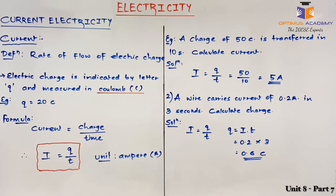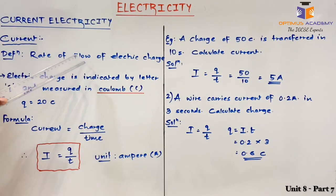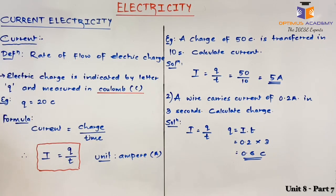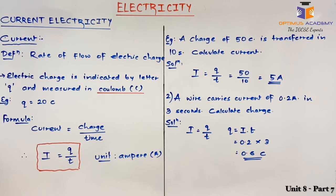First we shall discuss about current. Current is defined as rate of flow of electric charge. Electric charge is indicated by letter Q and it is measured in coulomb. For example, Q equals to 20 coulomb — so Q is the symbol for electric charge and coulomb is the unit for electric charge.